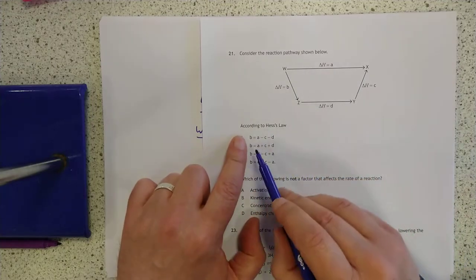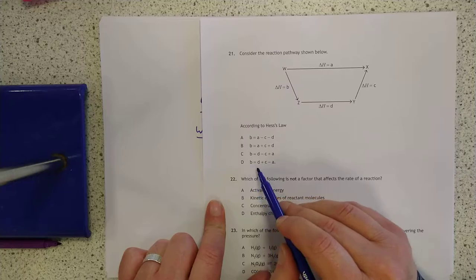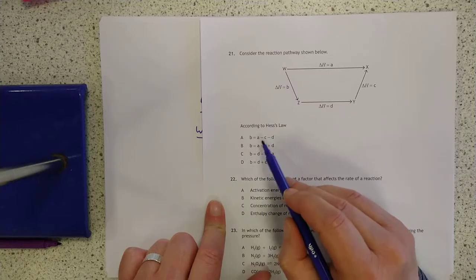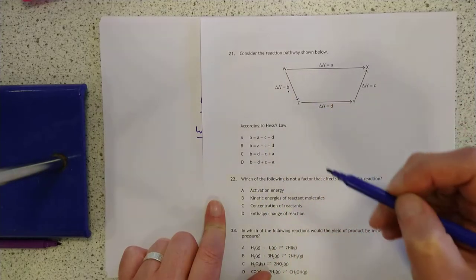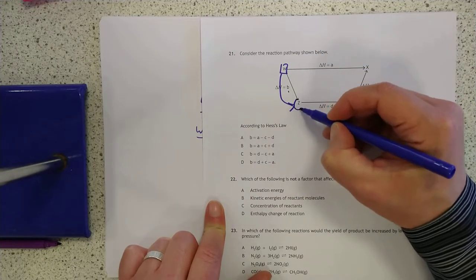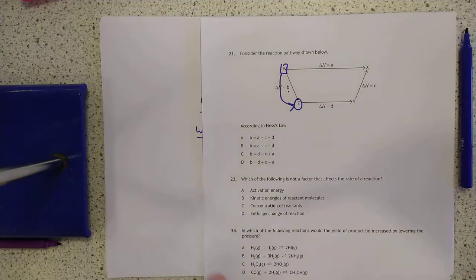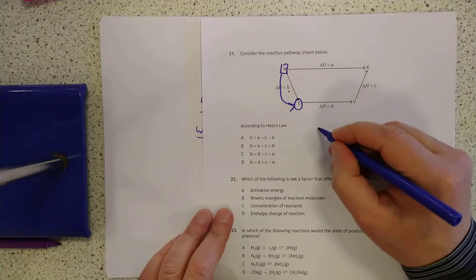According to Hess's Law, if you look at this, all of these answers are B equals something, some collection of the others. So there's your B. So we must be starting with this and going to that, because that's the entropy change. And as I said, the round the houses version, so that's why it's B equals.